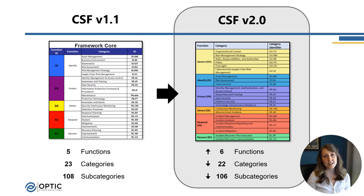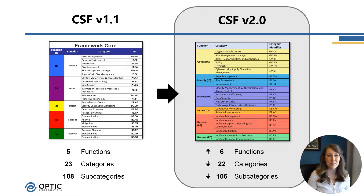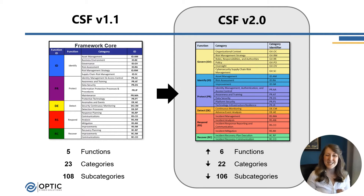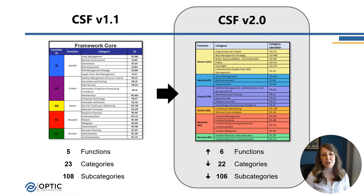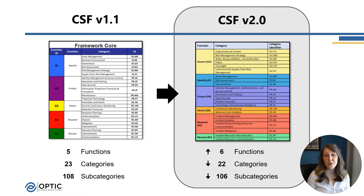There have been a lot of changes in the CSF core, namely the govern function, but there have also been a lot of categories and subcategories that have been realigned, added, and removed, and reshuffled around, which makes an interesting challenge for those of us already using the framework today. Luckily, NIST has released a mapping from 1.1 to 2.0, called an informative reference on their website — I'll link that below — and this will help us as we start to dig in.